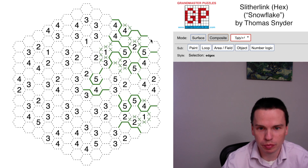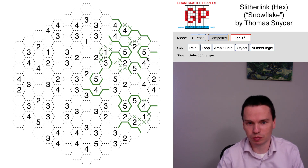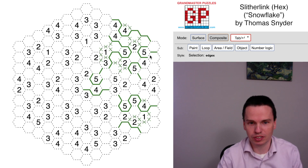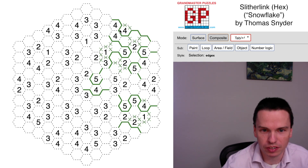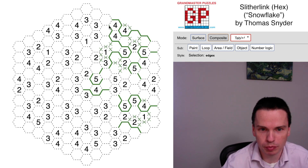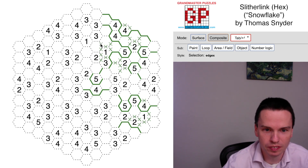This pattern in the grid says one end is going to come down and connect into the space — it can connect to here or here. We don't know enough yet about this 4 clue, but we've got some good progress. This 4 also comes up and over, and that means this comes up and over, so there's a loop end chase starting in this part of the grid.